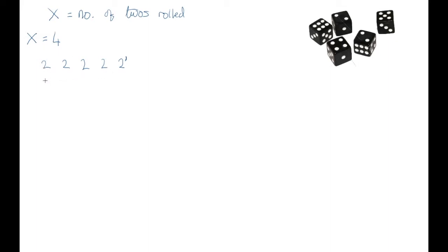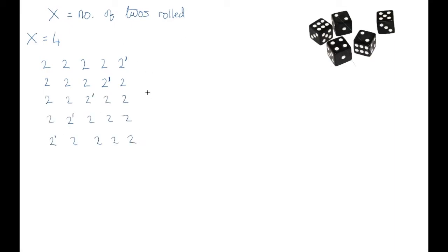We could have the first die be a two, the second a two, the third, the fourth, and the fifth one could be a five, or a six, or a one, or a three, or a four — just anything other than two. I'm going to use probability notation to denote this as 'not two', meaning it could be anything, just not a two. That would be one way to get our desired outcome of four twos. We can carry on doing this until we've written out all of the combinations — all the different ways in which we could have five dice rolled with four of them displaying a two.